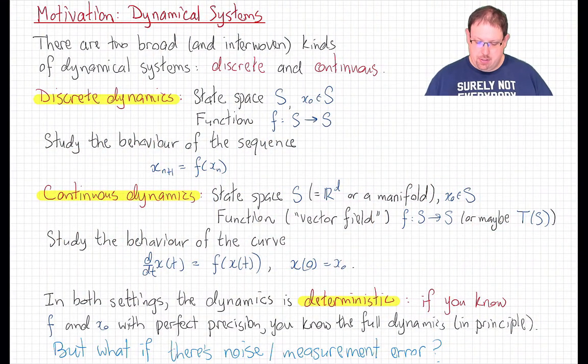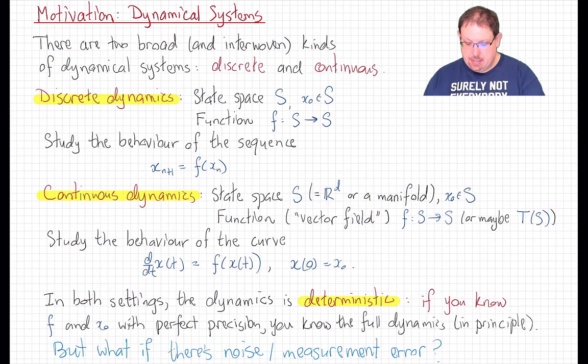In a discrete dynamical system, you have a state space S, some particular fixed starting point in that state space X0, and a function F from the state space to itself which mediates the dynamics.